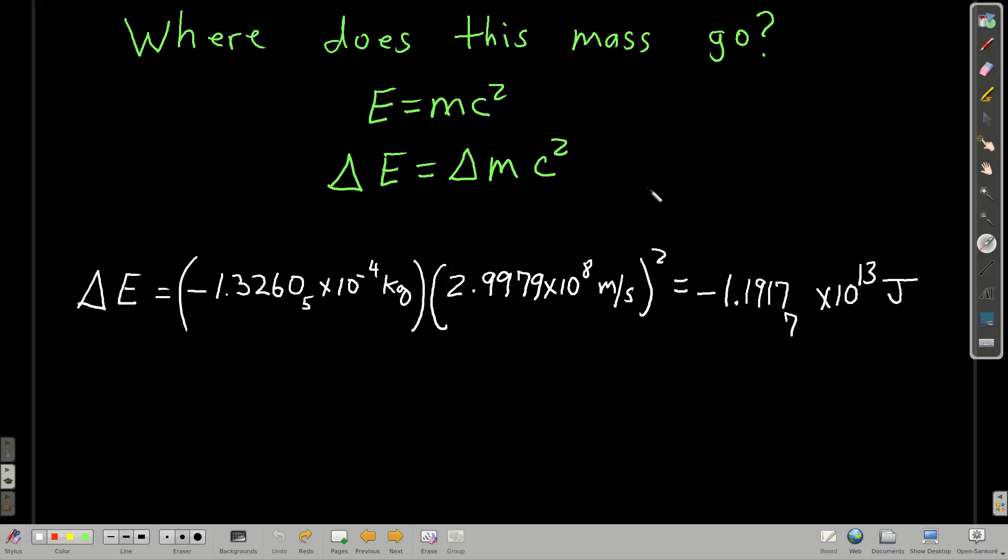Where does it go though? It can't just disappear, right? Well, we know from Einstein that E equals MC squared, which says that you can convert mass to energy and vice versa. So, the difference in the energy is equal to the difference in the mass times the speed of light squared.